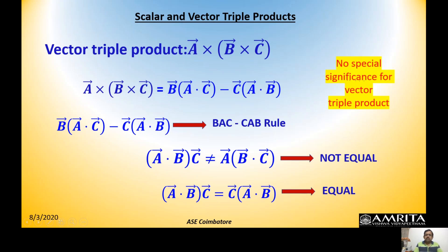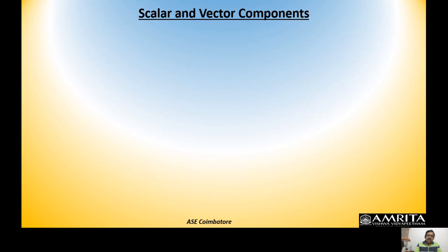There is no special geometric significance for the vector triple product by itself. We study it because we will make use of this formula while doing higher-order mathematics involving electromagnetic fields. Next, what are the scalar and vector components? A scalar component has no direction — the result is just a magnitude. A vector component retains a direction.